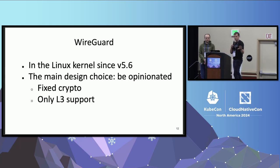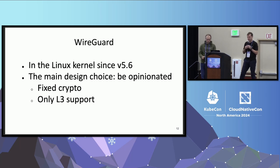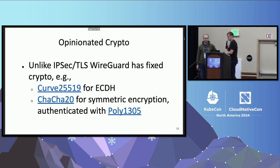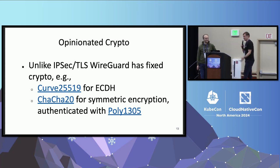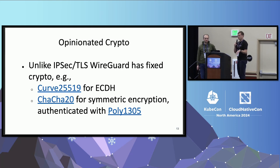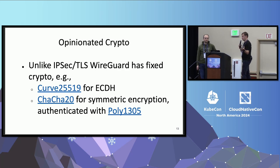The first design choice of WireGuard is to be really opinionated on everything. This means, for example, that cryptography in WireGuard is fixed. The big benefit is that you can't misconfigure anything because you can't configure anything. Curve25519 is the only way for WireGuard to exchange symmetric keys using public crypto, and ChaCha20-Poly1305 is the only way to actually encrypt traffic.